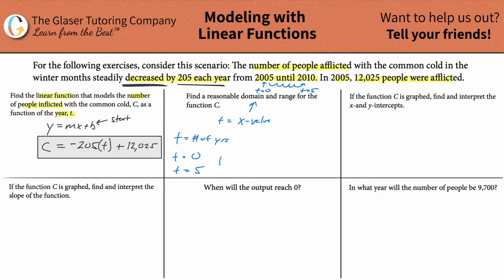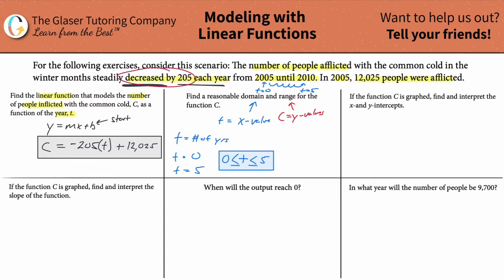Therefore the domain would be written like this: the time can be greater than or equal to zero and less than or equal to five. This is now the domain. The range is the list of possible y values, and the y values in this problem are the people with common colds. The maximum number of people there will be is 12,025, because that's the number we're starting with and we know it's being decreased every year.